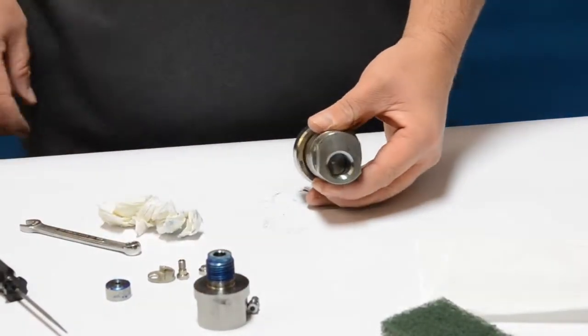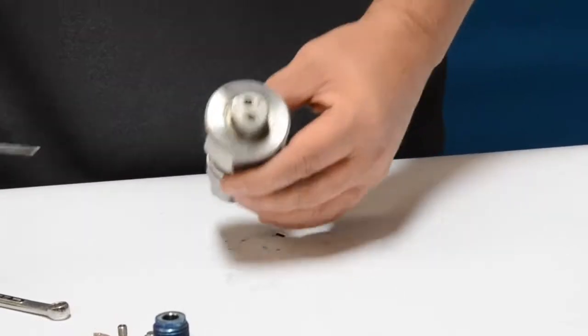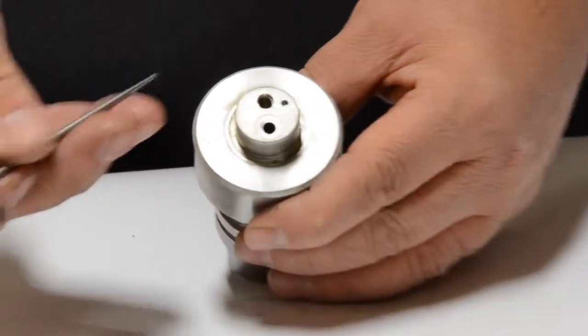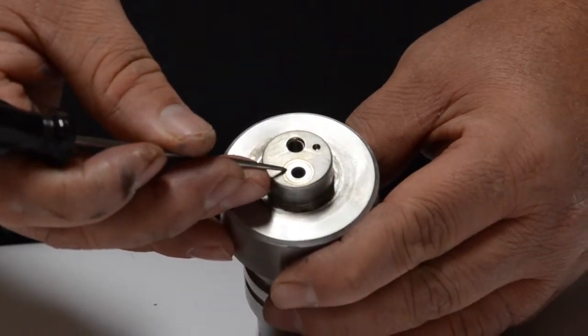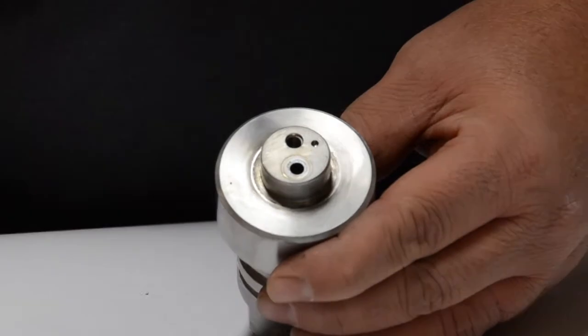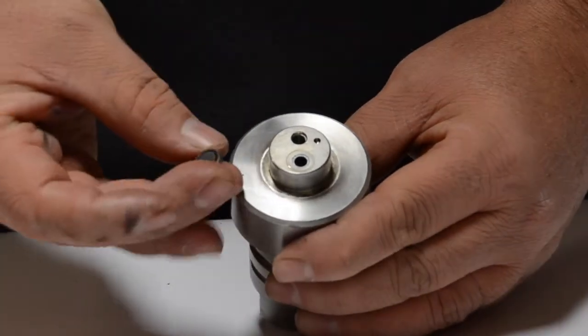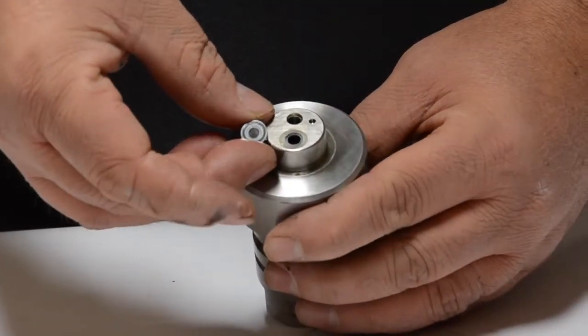Next, one of the more important things we have to do with the check valve is lap it. As you can see here, the face of the check valve has an indent from the low pressure poppet. One of the next things we're going to have to do is get this set up and bring it over to the lapping bench.